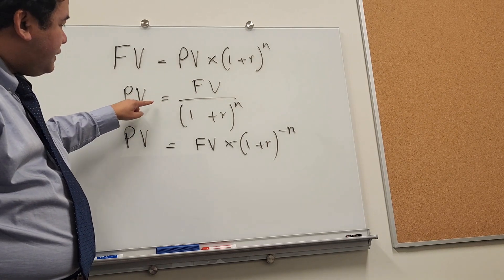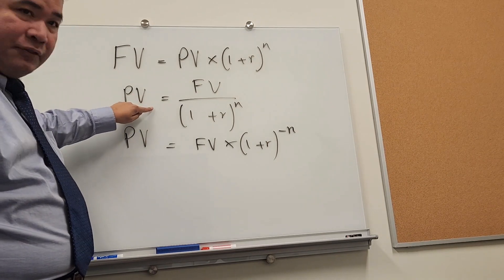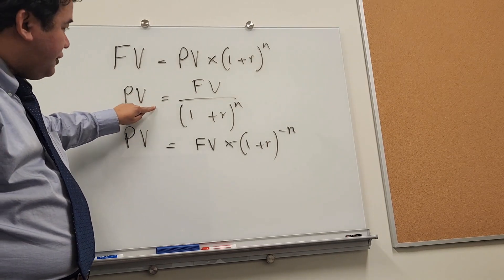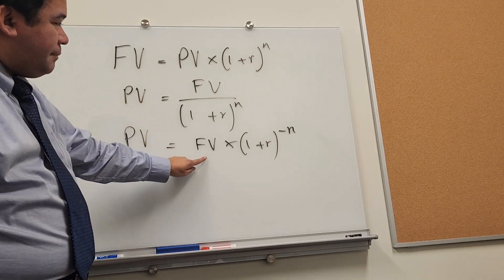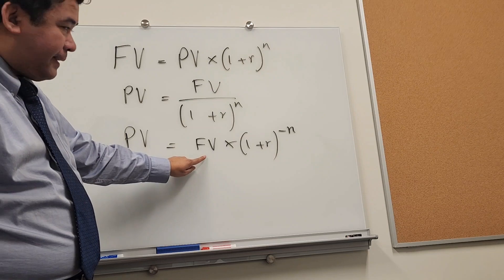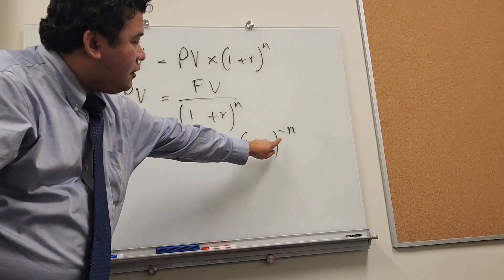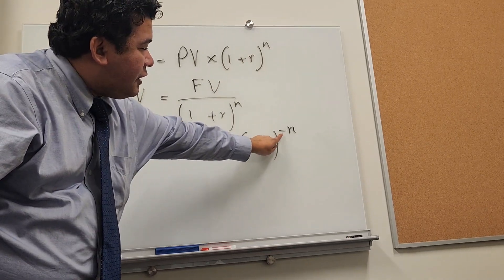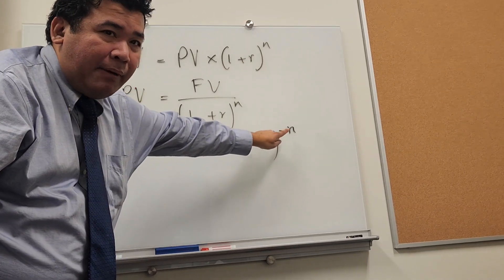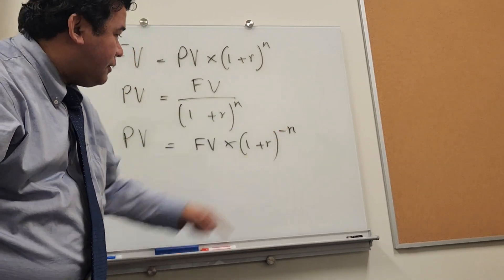If you notice, this method is for fractions and this method is for multiplication. The only difference is that you raise to the minus n power.